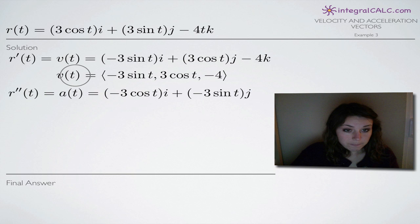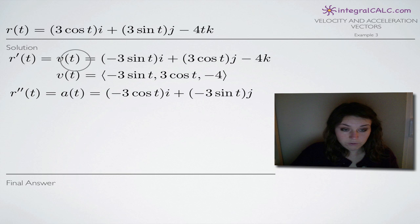Now to find acceleration, we're going to take the second derivative, which is simply the derivative of this function that we had here. So the derivative of, and again, same thing, forget about i, j, and k, just take the derivative with respect to t. So the derivative of sine here is cosine. So we're going to end up with negative 3 cosine of t. The derivative of cosine is negative sine, so we bring this negative out in front of the 3 and end up with negative 3 sine of t times j.